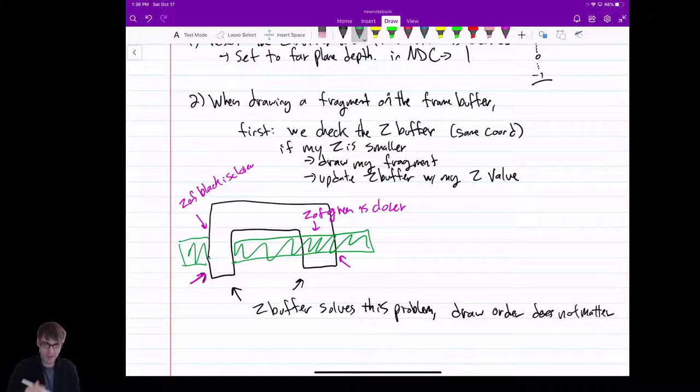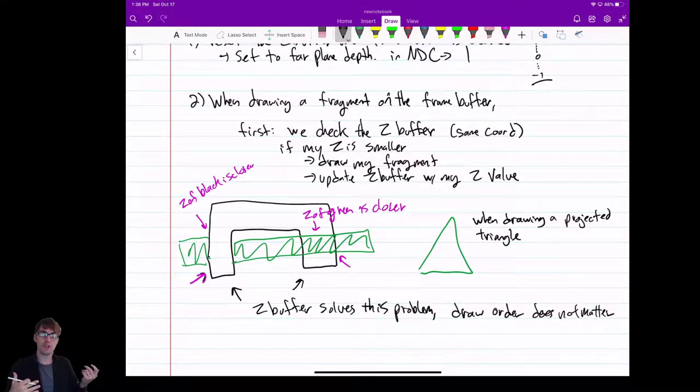Now one thing you might have clued into is that, wait a second. If I'm drawing my projected triangle, we've been through this, right? So I'm drawing a projected triangle. I don't have a Z. What do I do? Well, we learned in the 3D unit how we can project the Z in a way that makes sense to maintain that distance information. So if you do that, if you do project your Z to negative one to one, then you'll have your Z values at each vertex.